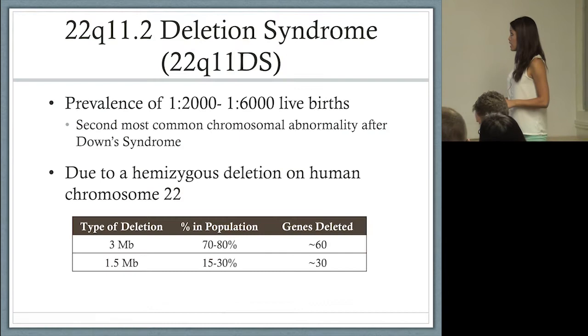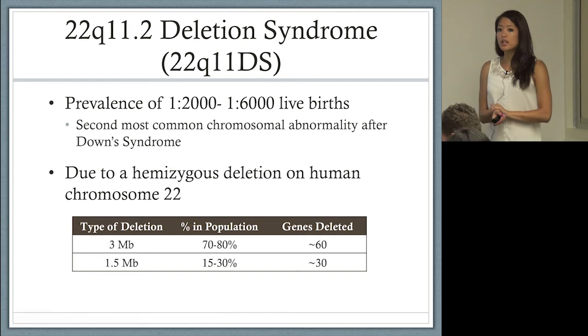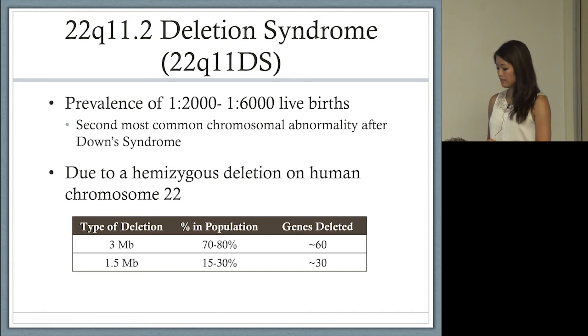22q11DS, I'm going to call it 22q from now on, has a prevalence of about 1 to 2,000, 1 to 6,000 live births, and it's quite common. It's the second most common chromosomal abnormality after Down syndrome.